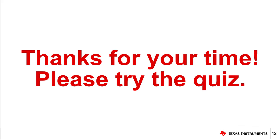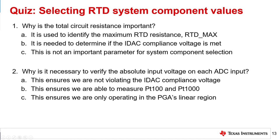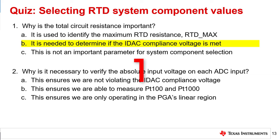That concludes this video. Thank you for watching. Please try the quiz to check your understanding of this video's content. Question 1: Why is the total circuit resistance important? The correct answer is B: the total circuit resistance is needed to determine if the IDAC compliance voltage is met. Question 2: Why is it necessary to verify absolute input voltage on each ADC input pin? The correct answer is C: this ensures we are only operating in the PGA's linear region.